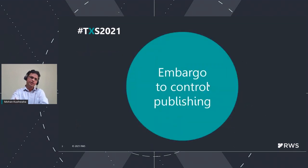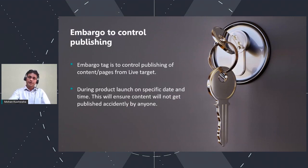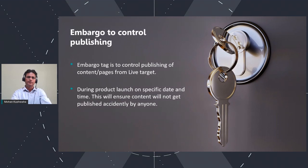Let me move to the main topic. Embargo is basically about controlling publishing. We have this feature to enable how we do this: if we do any publishing for any content, we can make that available only when there is a tag controlling it. Basically, an embargo tag configured through a keyword sets a date that controls the live target — so even if someone accidentally publishes anything, it won't go live without this tag.